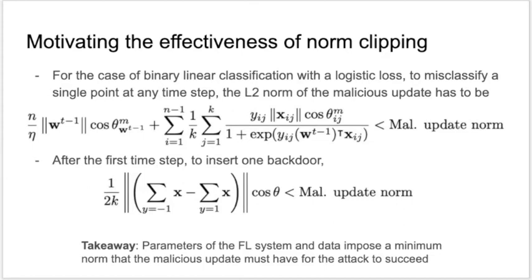The bounds can be numerically computed for any time step. In particular, for the first step of training, we get an expression that is mainly dependent on the angle between the means of the two classes and the point to be misclassified. Thus, there is a fundamental lower bound on the norm of the malicious update in order for it to be successful. This justifies the use of the L2 norm clipping defense, and we are currently working on extending these bounds to more complex settings.